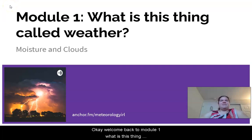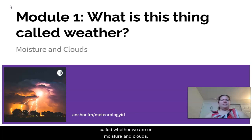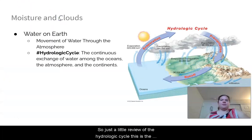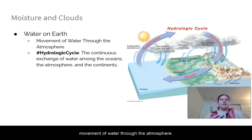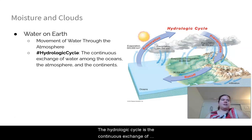Welcome back to module one, 'What is this thing called weather?' We are on moisture and clouds. Just a little review of the hydrologic cycle — this is the movement of water through the atmosphere. The hydrologic cycle is the continuous exchange of water among the oceans, the atmosphere, and the continents.